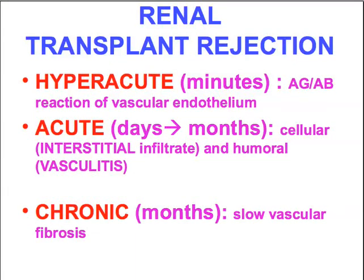Let's spend a couple of minutes to talk about renal transplant rejection. This would be a form of immune attacking, not of our body's own tissue, but usually either allografts from the same species or xenografts from other species. In the case of renal transplants, we're talking about allografts. We see three classical patterns of renal transplant rejection.